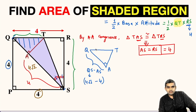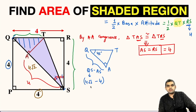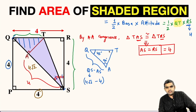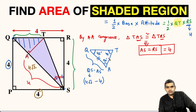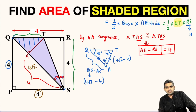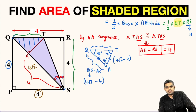Since angle A is 90° by construction and angle Q is 45°, the third angle is also 45°. Since the two base angles are equal, the triangle is isosceles, so side AT also equals QA = 4√2 − 4. We need to find QT.